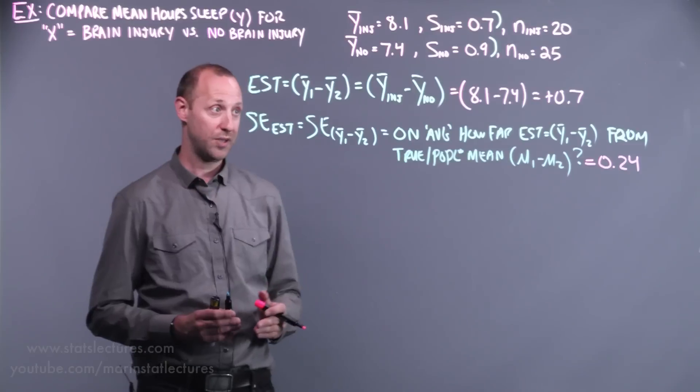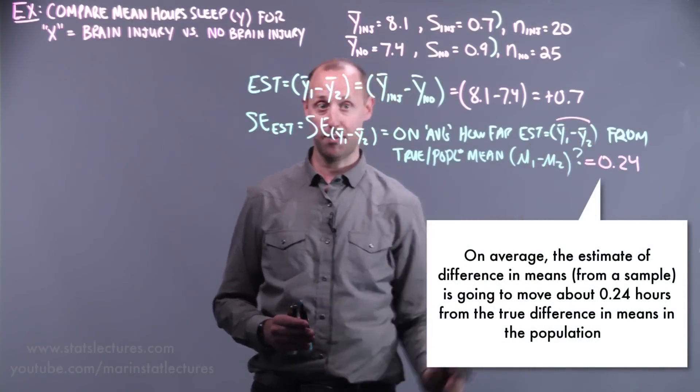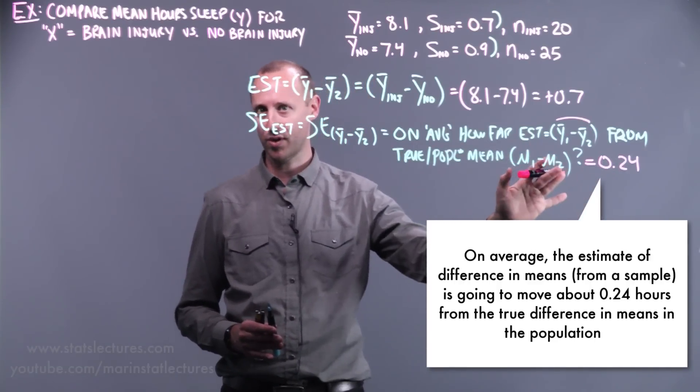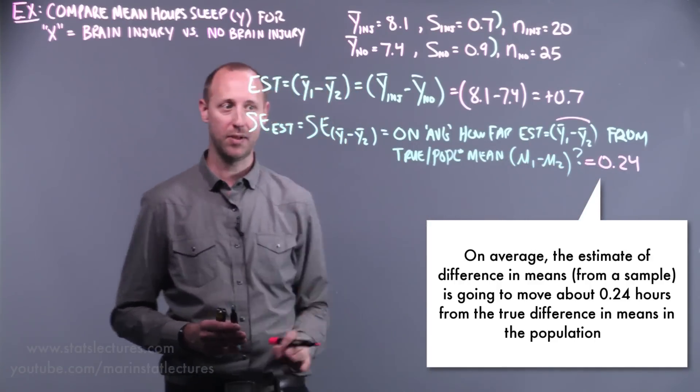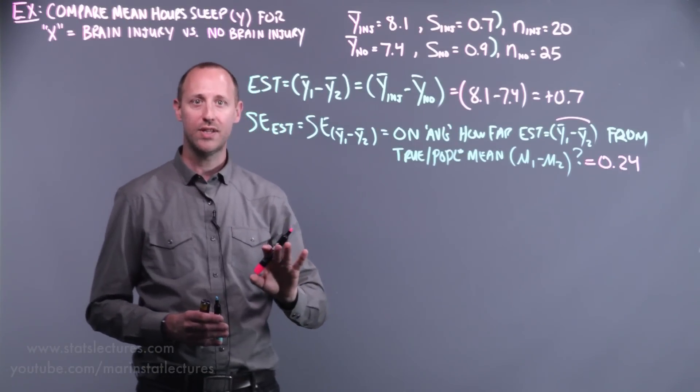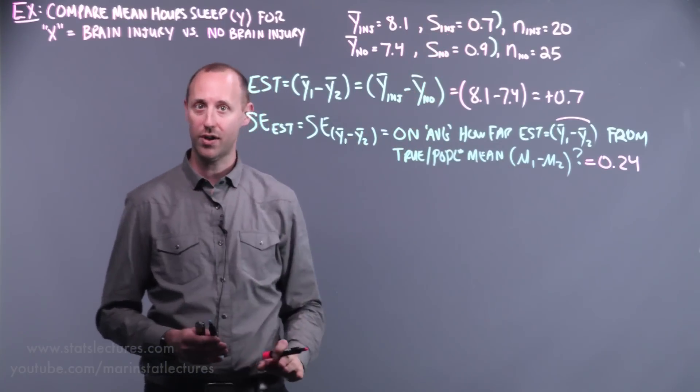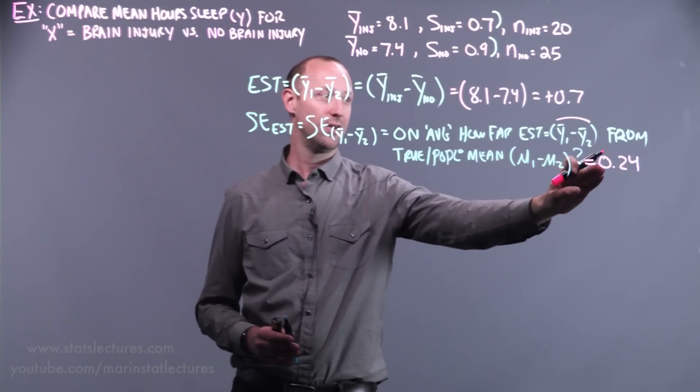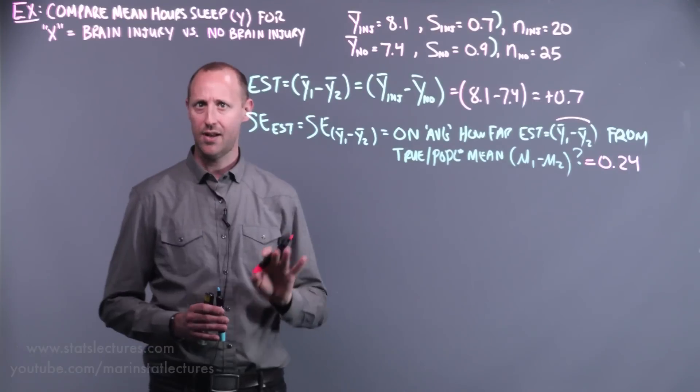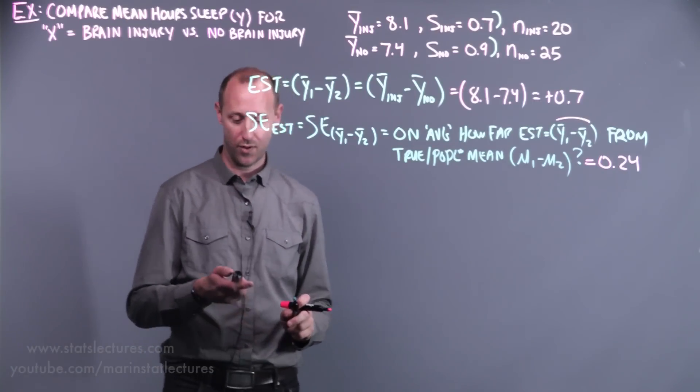The interpretation of this: on average, the estimate that we get from a sample of data is going to move about 0.24, about a quarter of an hour, from the true difference in means in the population. If you were to work with the assumption that these two standard deviations at the population level are equal, you're going to get a standard error of 0.245. So not a big difference practically, and not worth getting distracted at this point. We'd like to focus on the concepts, not the calculations.